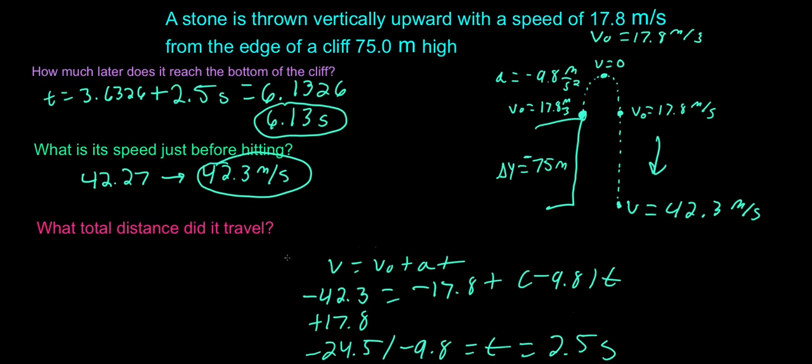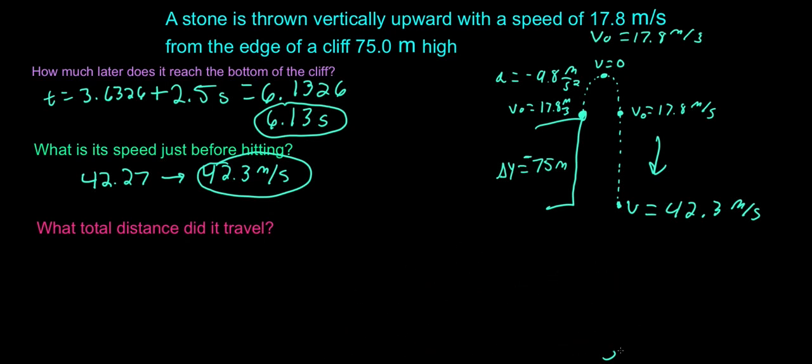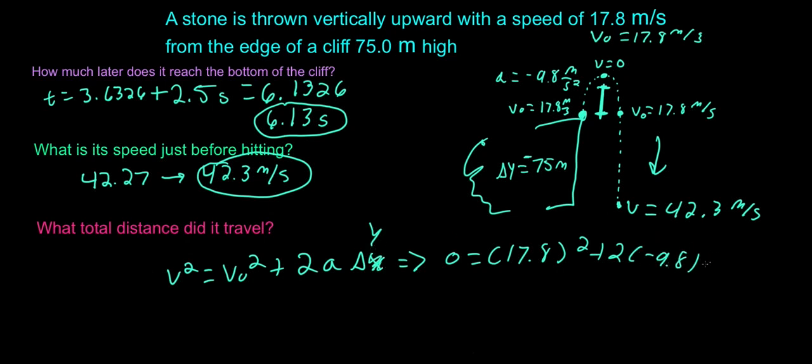So we have everything answered except for the total distance it traveled. So how do we find that? We already have the delta y for this portion, which is 75. So we have to find this distance right here. Keep in mind, we're going to have to double it, because delta y will go up here, and then we'll go another here, and then we'll go here. So we're going to double this distance. So we have acceleration, we have initial velocity, we have final velocity. We even had time. But let's use v squared equals v initial squared plus 2a delta x. V squared is 0. Initial is 17.8 squared plus 2 times gravity. Delta x will be delta y. That's what we're solving for.